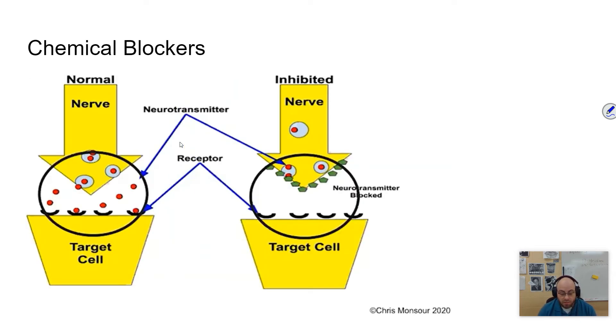Chemicals can also interfere with the signal transduction pathway. I'll give a couple of examples here. So we've talked about neurotransmitters. Neurotransmitters are chemicals that complete the pathway of a nerve interacting with its target cell. This target cell could be another nerve, it could be a gland, it could be a muscle. And so here's the nerve.